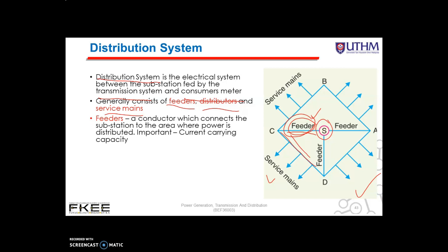The main consideration in the design of a feeder is the current carrying capacity. The second one is the distributor. A distributor is a conductor from which tapings are taken for supply to the consumers. In this figure, we can see AB, BC, CD, and DA — these we call the distributors.